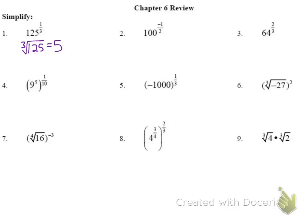Number 2: we have 100 to the negative 1/2. The first thing we can do is take the negative and make it a positive exponent by writing it as 1 over 100 to the 1/2. The 1/2 means square root, and the square root of 100 is 10. So our final answer is 1/10.